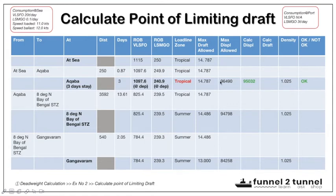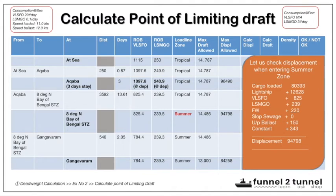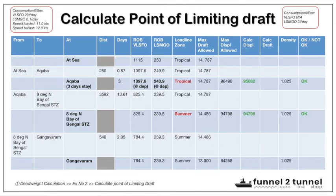With 95,032 tons departure displacement at Akaba, we are well below the maximum allowed displacement — condition is OK. From Akaba to 8° North the displacement only reduces, so that condition is also OK. Checking displacement when entering the summer zone: with cargo of 80,393 tons plus the light ship and everything else, the displacement equals 94,798 tons — exactly equal to the summer displacement — so the condition is OK.